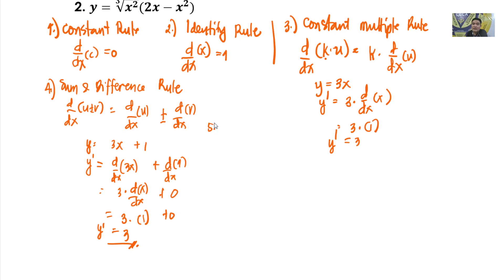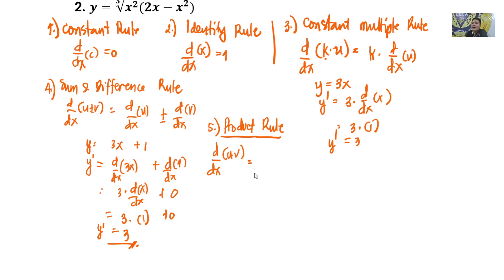Next rule is the Product Rule. The derivative of u·v, where u and v are both differentiable functions of x, with respect to x. The formula is u times the derivative of v with respect to x, plus v times the derivative of u with respect to x — or simply: u dv plus v du, where u is the first term and v is the second term.